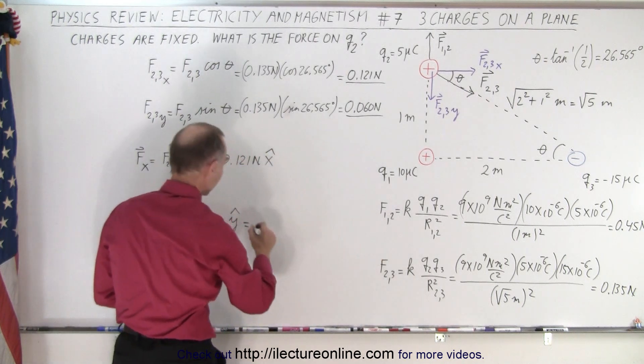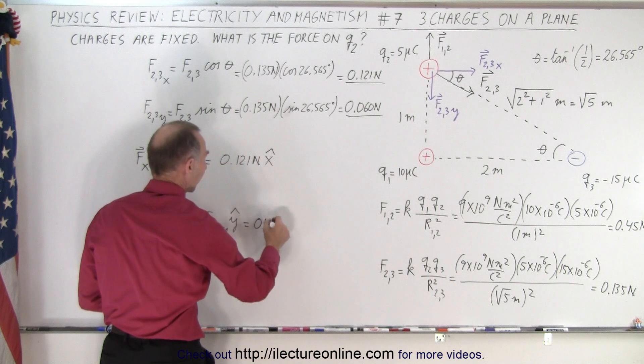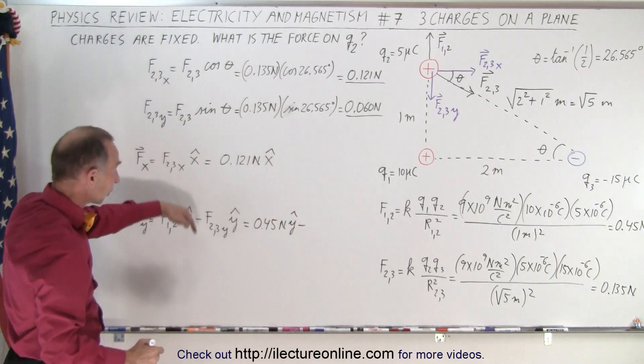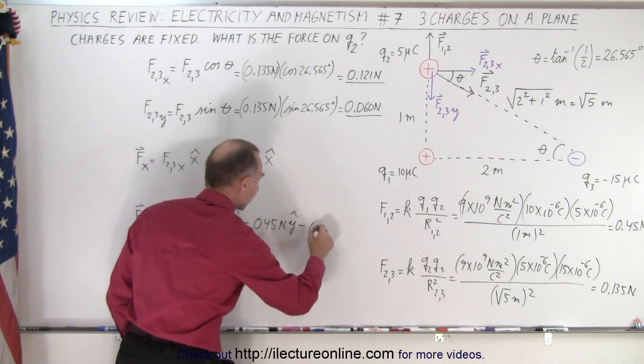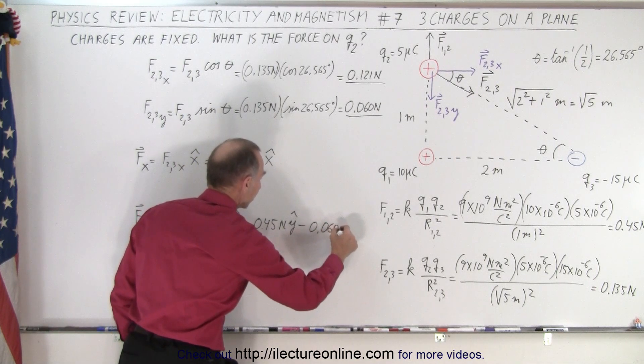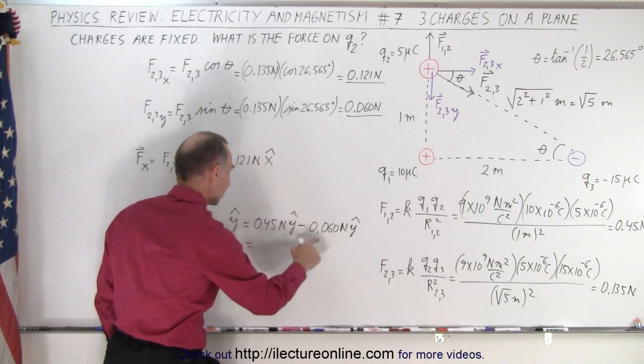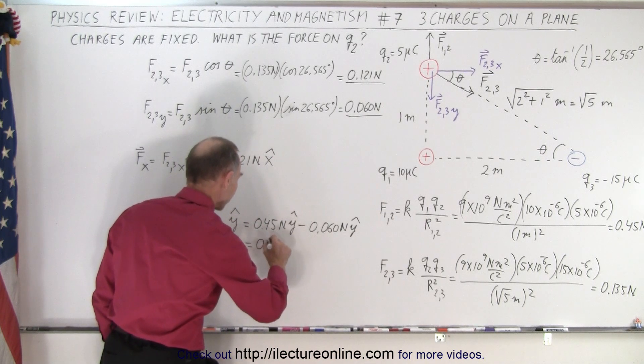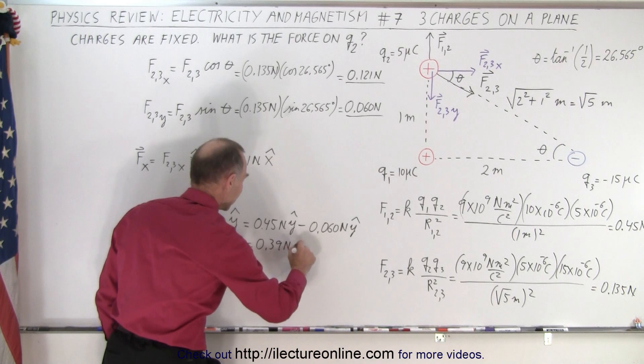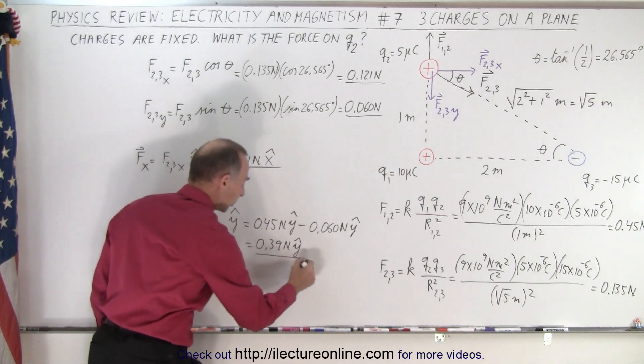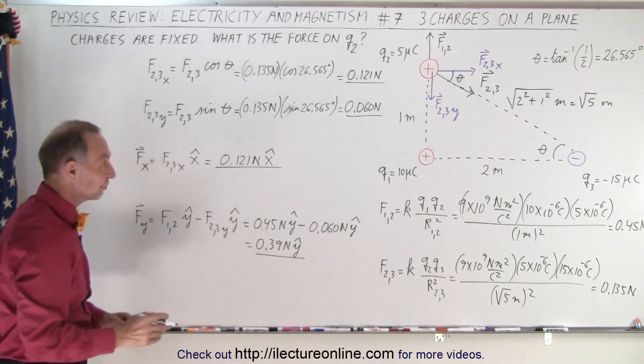which is 0.45 newtons in the positive y direction, minus that component going down, which is 0.060 newtons in the y direction. And so that is equal to this minus this, that would be 0.39 newtons in the y direction. So now we have the x component and the y component of the final force, so now we can combine them.